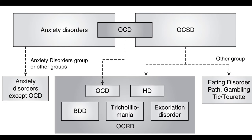Now let's look at OCD and hoarding. From this figure, Hollander and Wong hypothesised a model focusing on compulsivity and impulsivity, proposing the concept of obsessive compulsive spectrum disorder, which includes OCD-like compulsive behaviours like eating disorders, pathological gambling, and tic or Tourette's disorders. Based on this model, the DSM-5 working group discussed how to organise traditional anxiety disorders, and finally OCD became independent of the anxiety disorder group, becoming a core disorder of the OCRD group, which includes hoarding disorder.